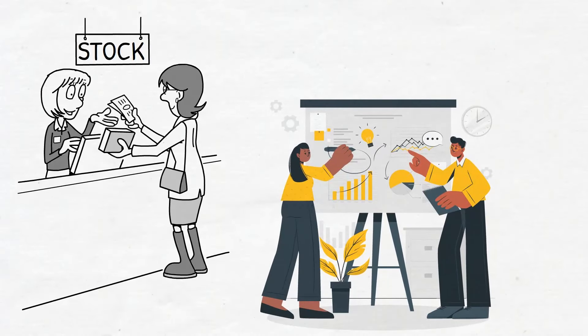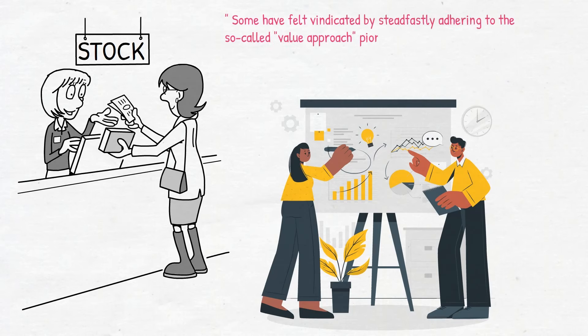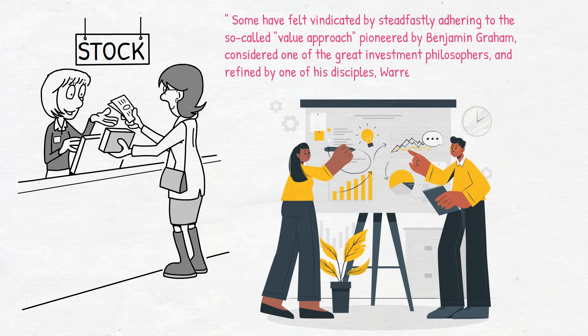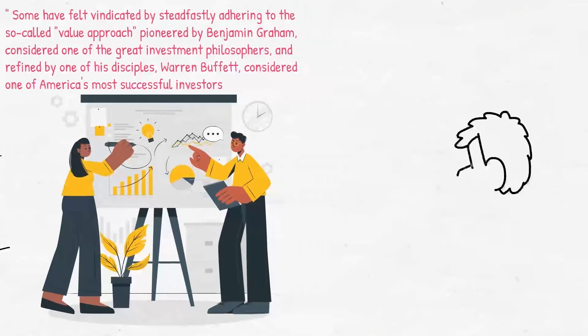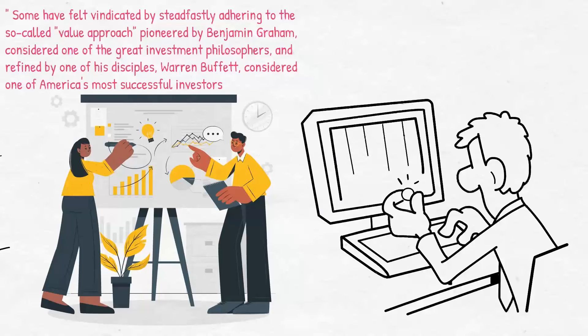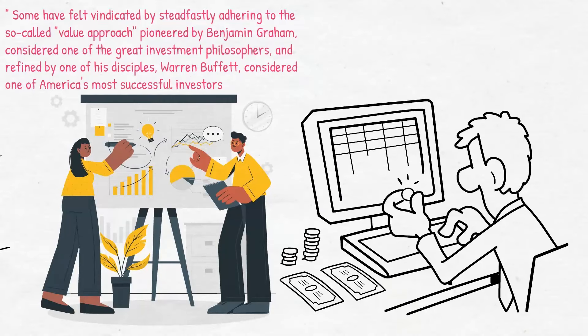Some have felt vindicated by steadfastly adhering to the so-called value approach pioneered by Benjamin Graham, considered one of the great investment philosophers, and refined by one of his disciples Warren Buffett, considered one of America's most successful investors. In brief, this approach means that an investor should buy a stock when it is selling below its book value or balance sheet value and sell when the market price reaches this value or goes above it.